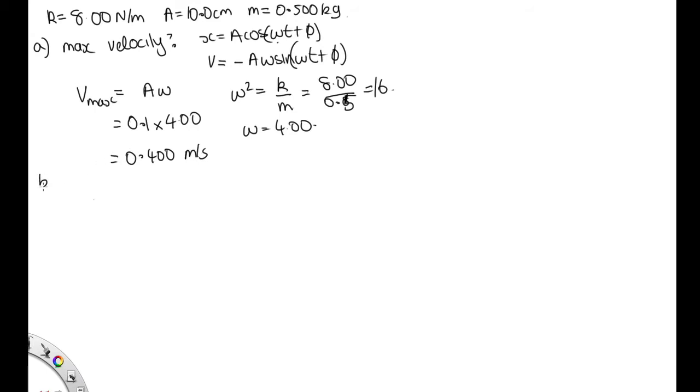Part B, we were asked what's the maximum acceleration. We've seen that acceleration is equal to minus omega squared x. So this will be maximum when x is maximum, and the maximum displacement is the amplitude. So A max is equal to minus omega squared A.